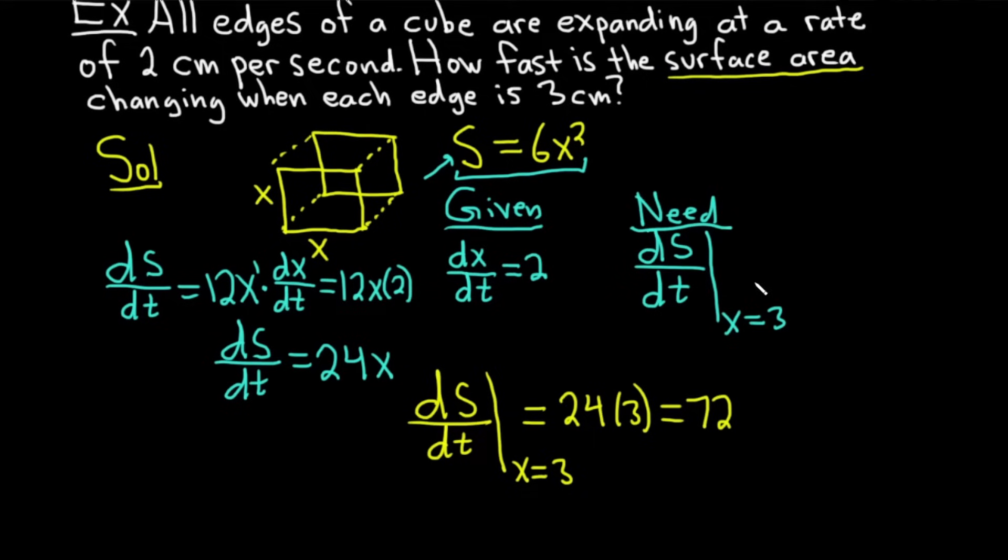Since it's area and the original measurement given for length was centimeters, it's going to be centimeters squared. And the unit of time was seconds. So it'll be per second. So the surface area is changing at a rate of 72 centimeters squared per second when each edge is equal to 3 centimeters. Let's go ahead and do one more example.